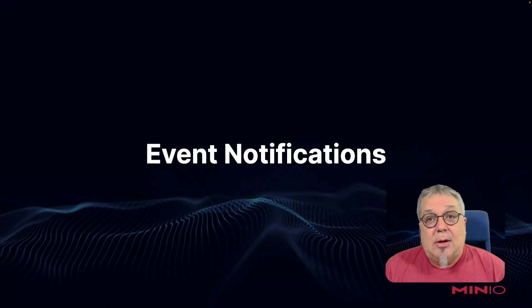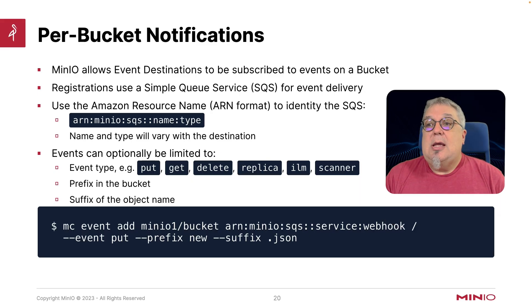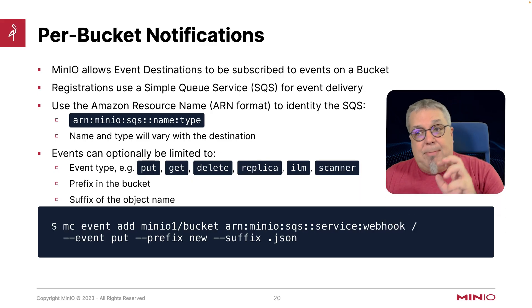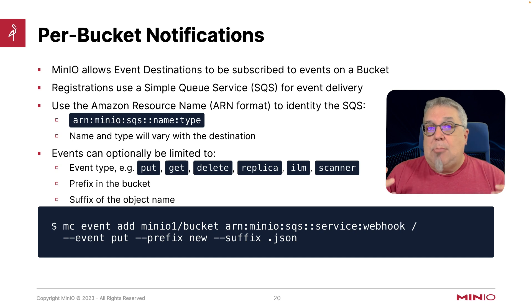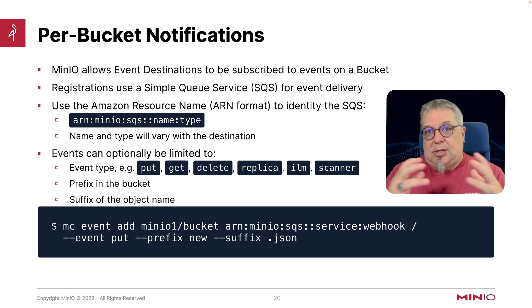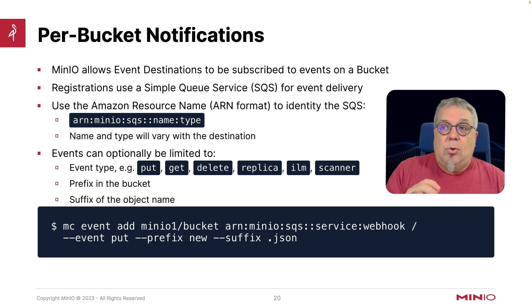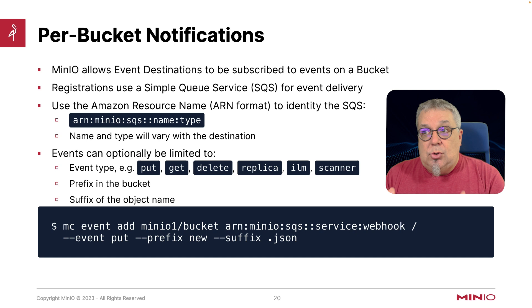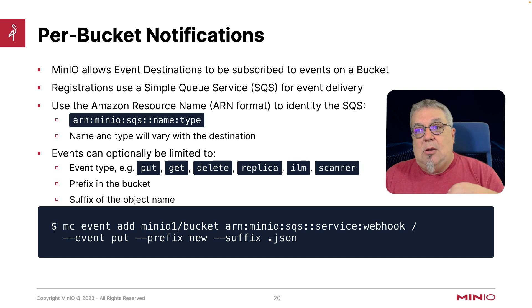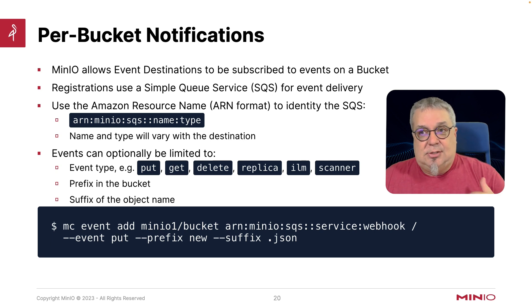Now let's talk about event notifications. Notifications are basically per-bucket notifications — this is how you're going to set up most of the event listening that you're going to do. Generally speaking, you're not going to do the site-wide ones as event notifications. Min.io allows your event destination to be subscribed to a bucket that is going to publish events to a Simple Queue service, which is then going to be read by our destination whenever there is an event sent to it.